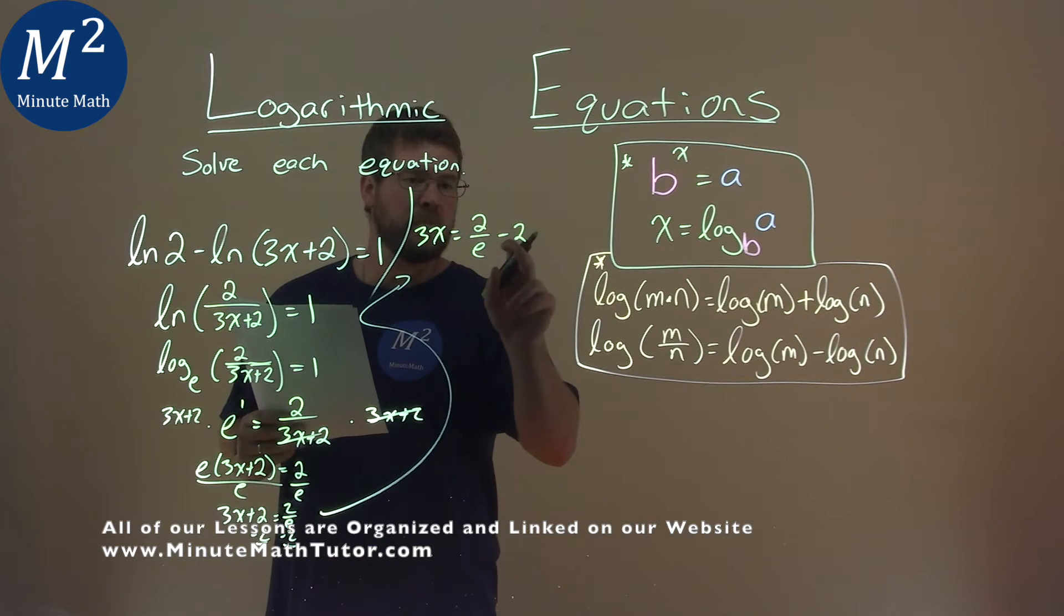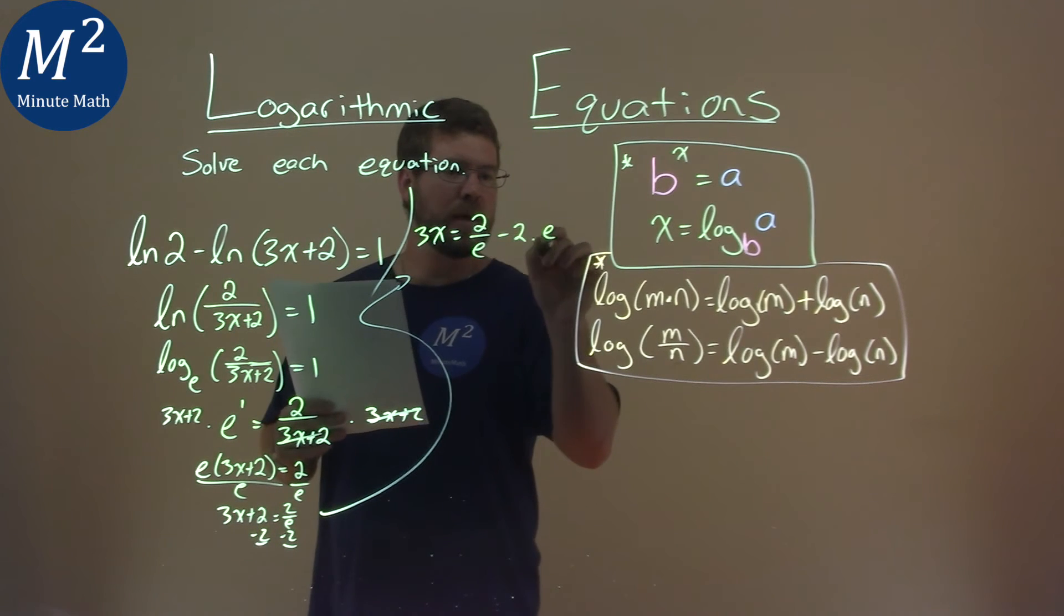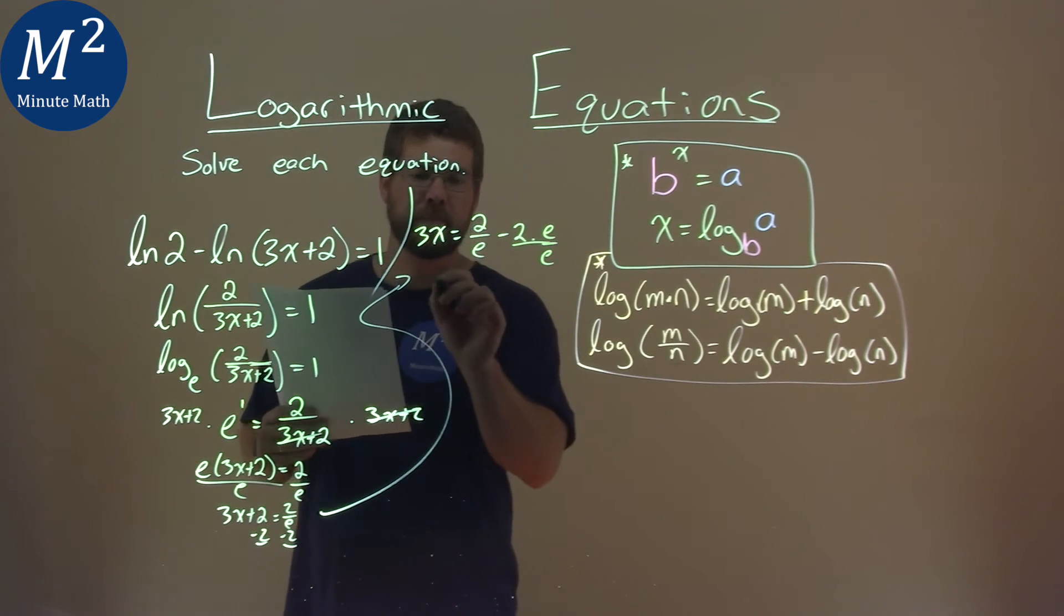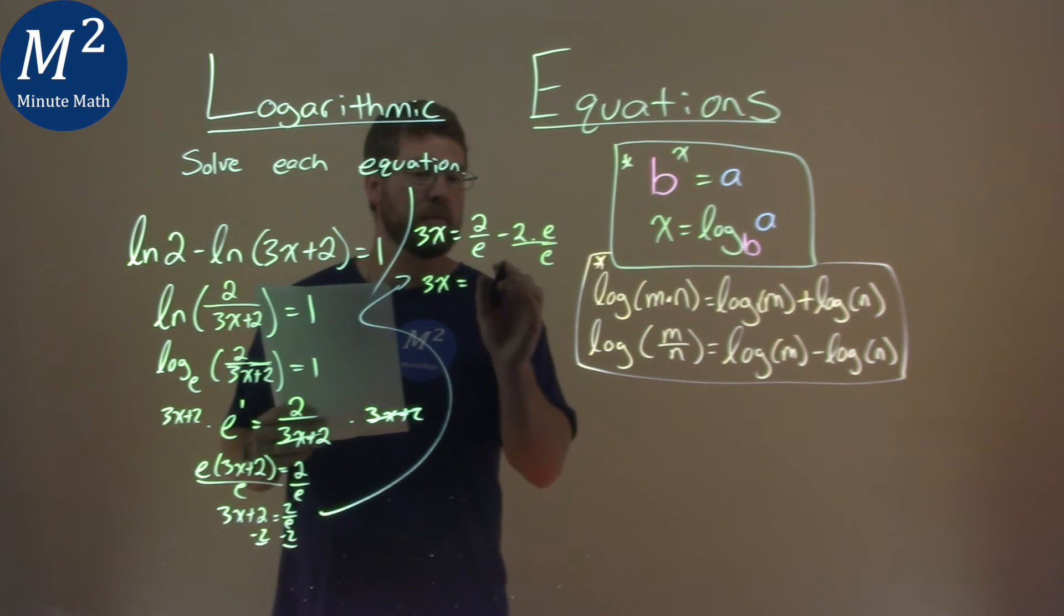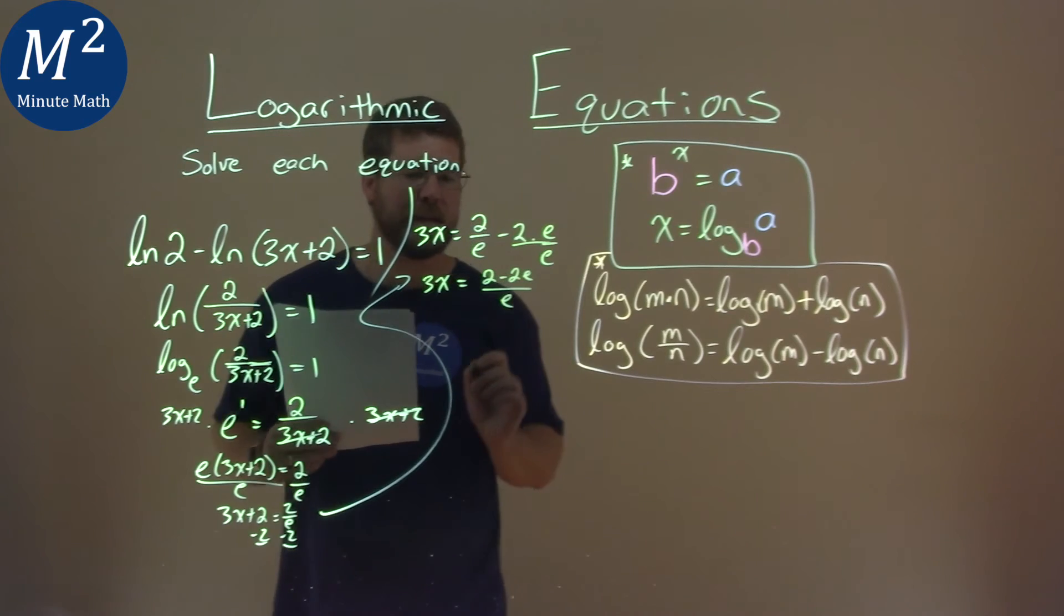Well, I want to combine these and so if I subtract a 2, I don't have the same base, but if I multiply this by an e over e, I will. So it's like minus 2 is the same as minus 2e over e. We now have 3x equals, combine it, 2 minus 2e over 1e right there.